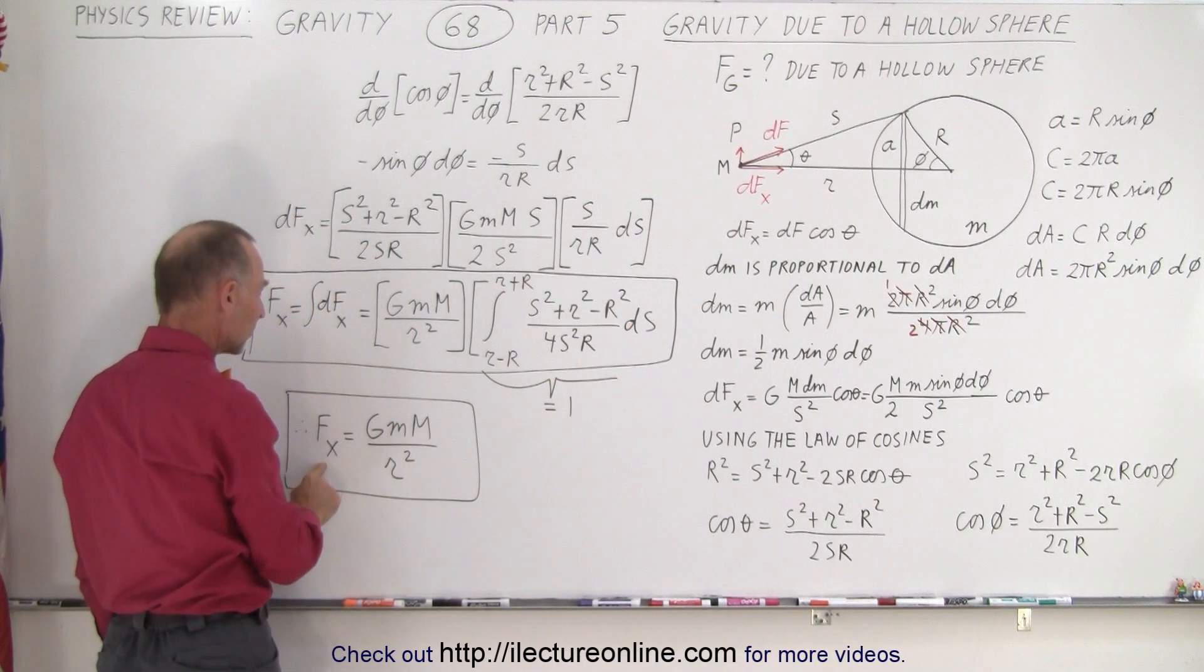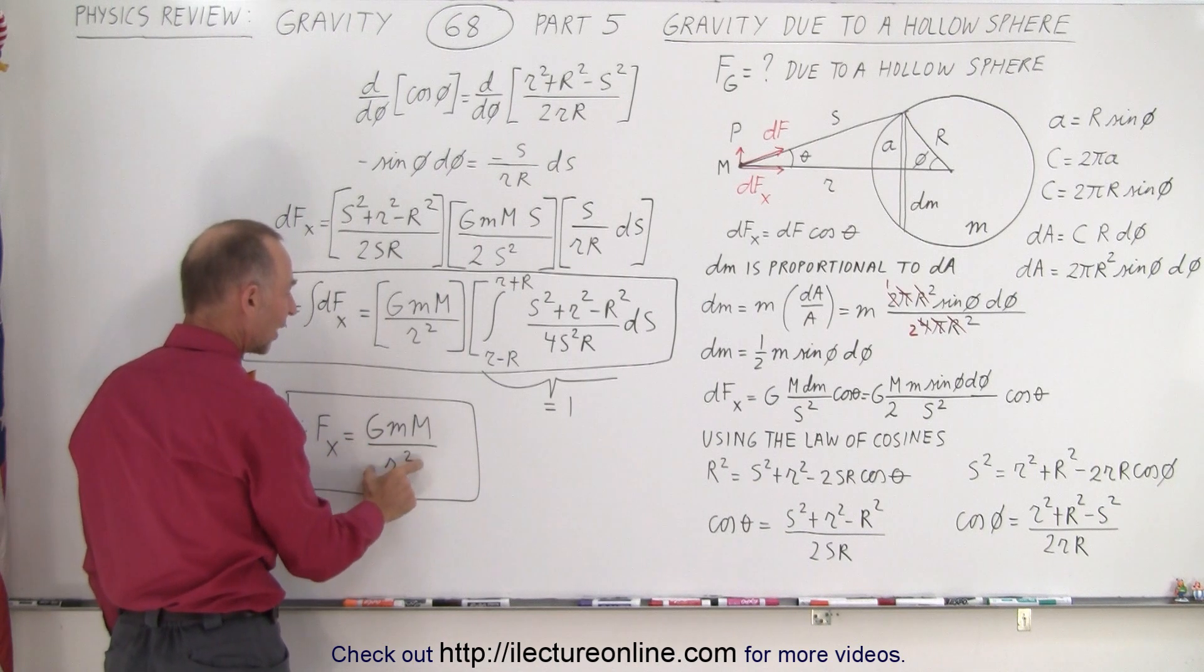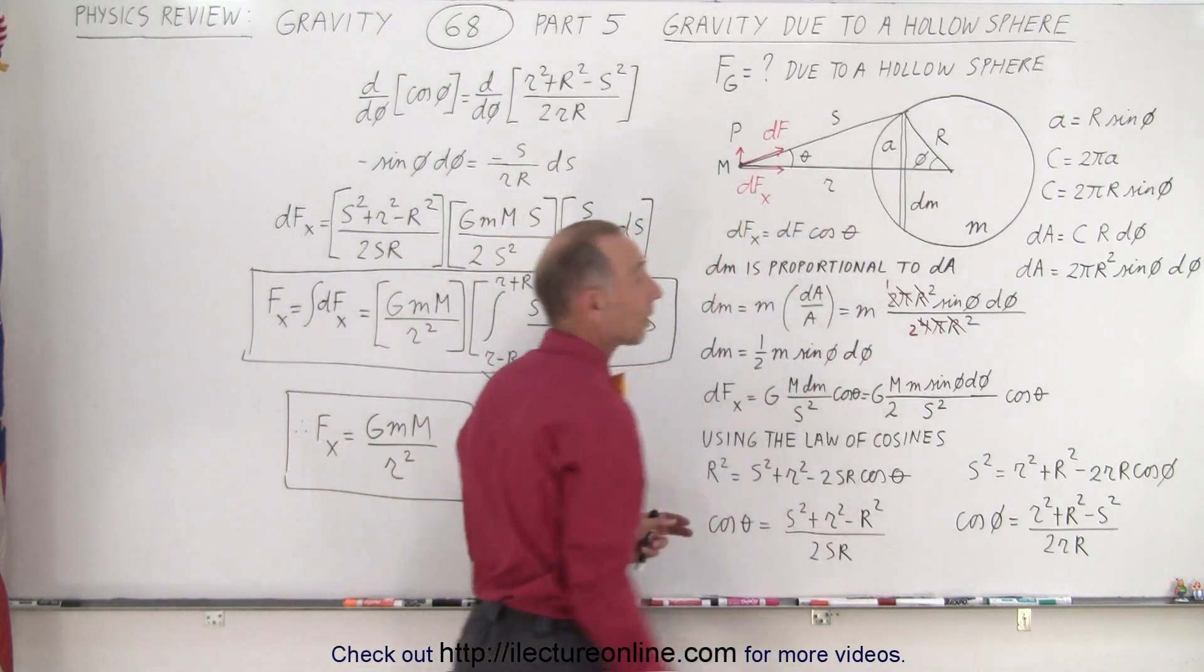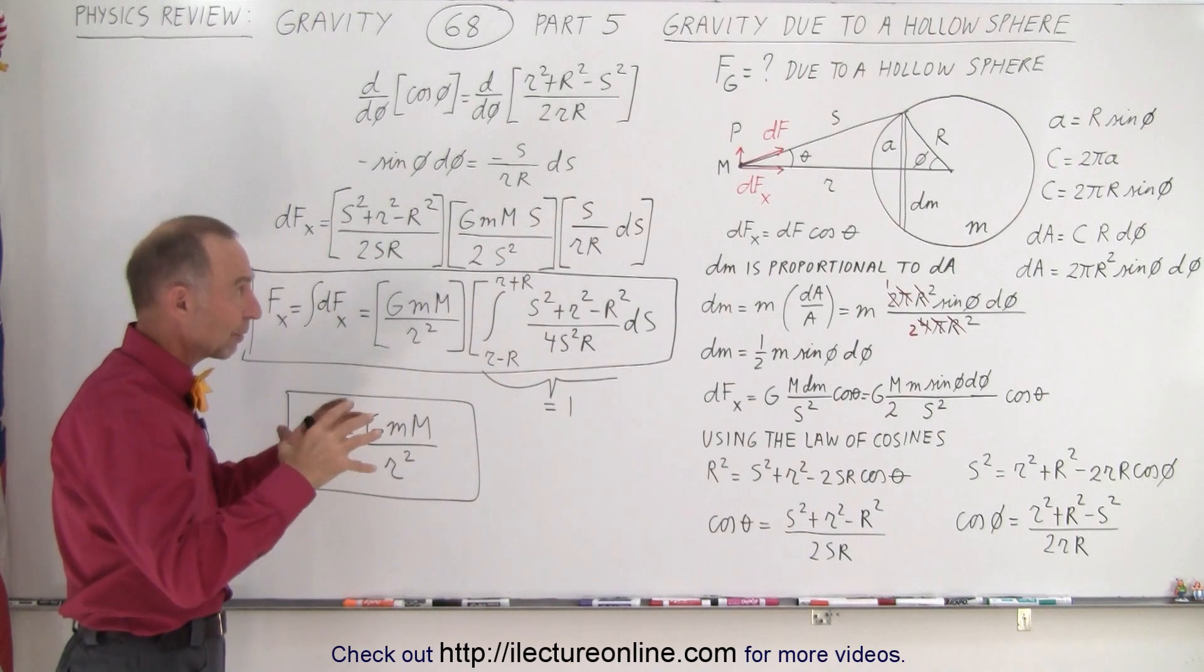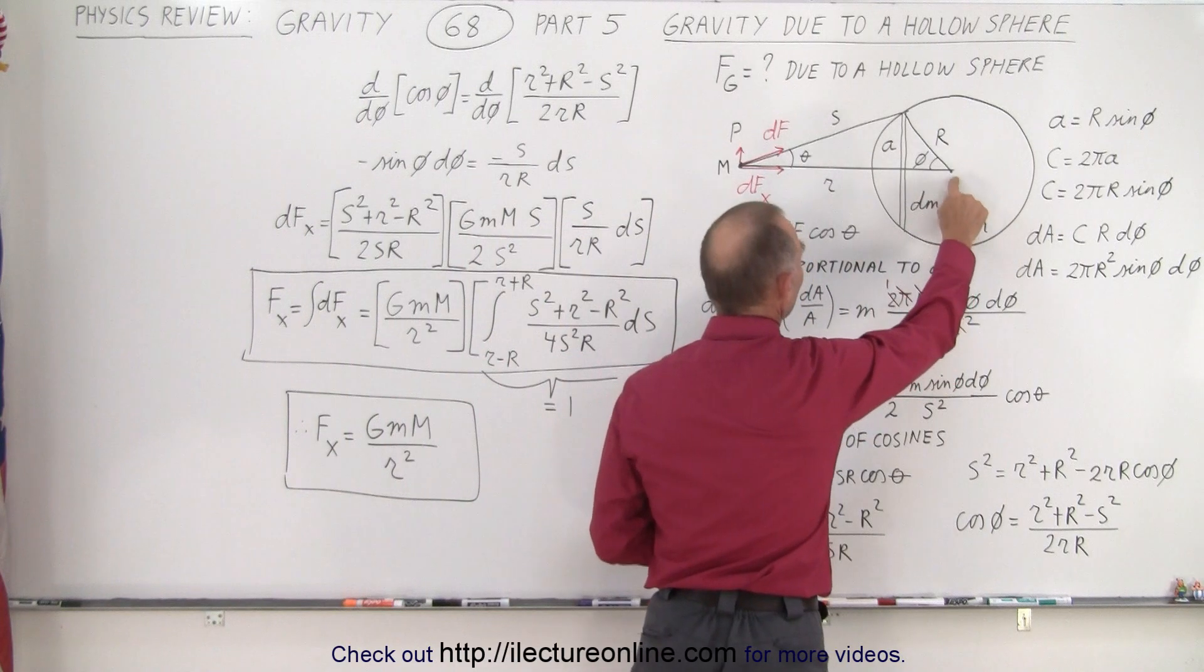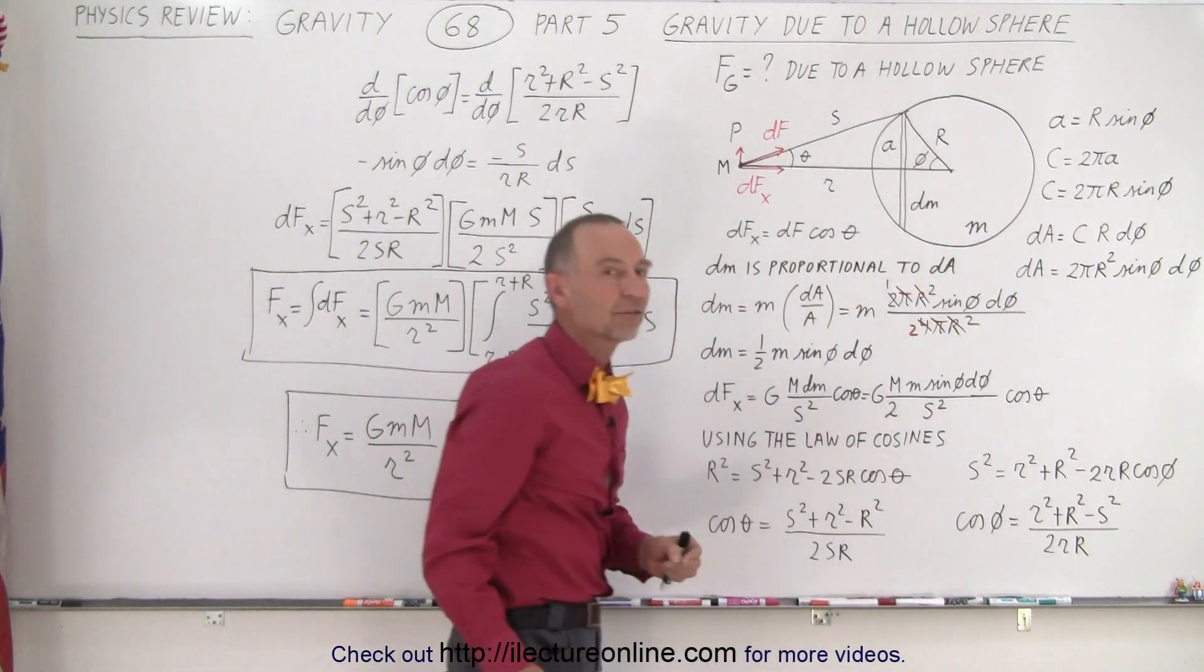Which simply means that the force of gravity equals G times the product of the two masses divided by the distance between the center of mass of the two objects squared. Just like what we expected, the force of gravity due to a hollow sphere is equal to the force of gravity as if all that mass was concentrated at the center of mass of the sphere.